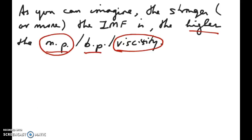In this video about IMF, I want to give you an example of how to make predictions of the three properties I talked about in the previous video: melting point, boiling point, and viscosity.